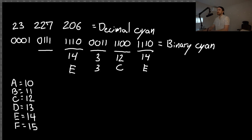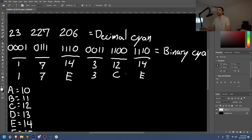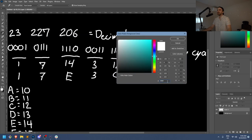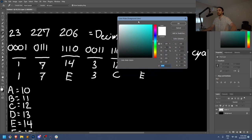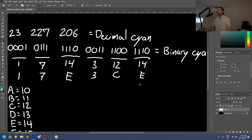Continuing: 0011 is 2+1 = 3, expressed as 3. Then 1110 again is 14, expressed as E. Then 0111 is 4+2+1 = 7, expressed as 7. And finally 0001 is 1, expressed as 1. So our cyan color can be expressed as 17E3CE in hexadecimal.